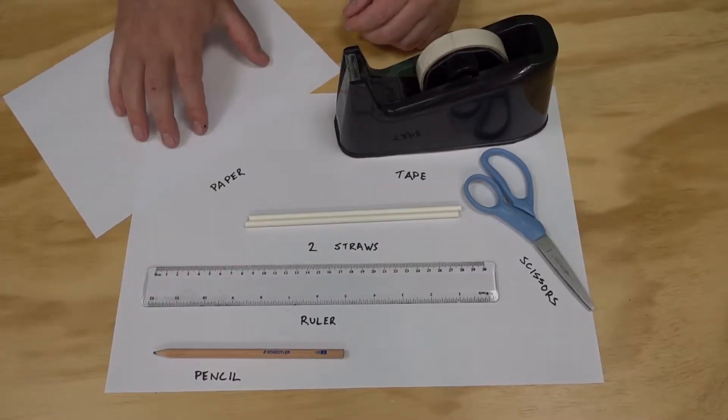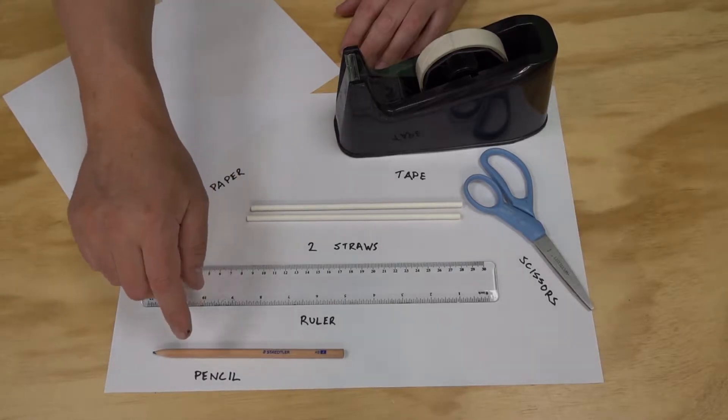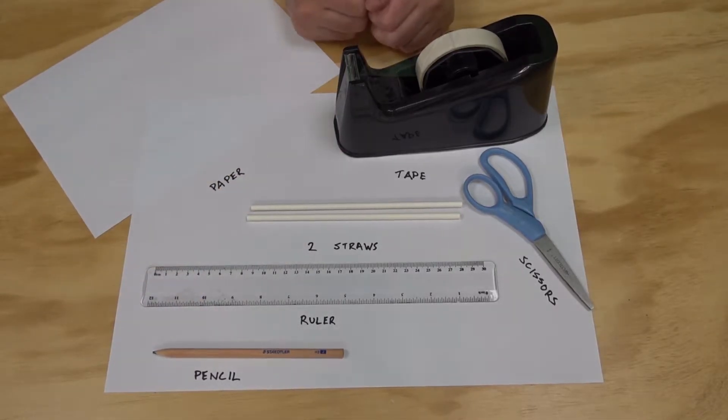Let's check out what you'll need. The materials for these are really simple. One piece of paper will be enough to make both of them. We need two straws, a ruler, pencil, scissors, and some tape.